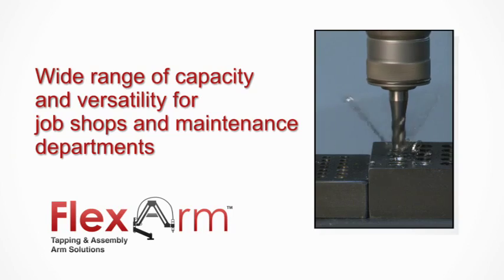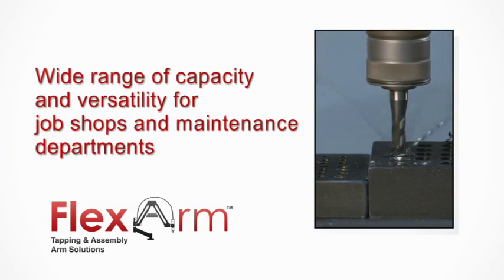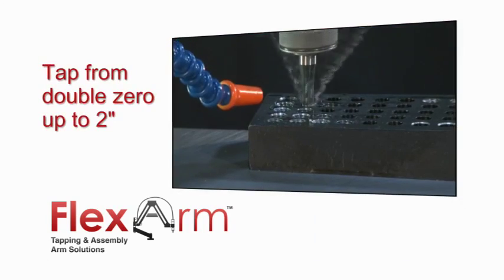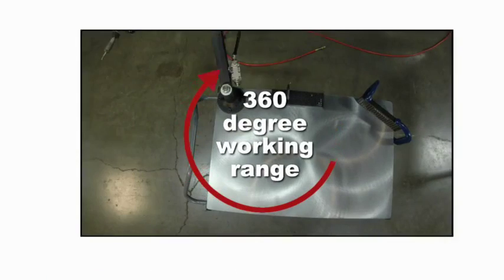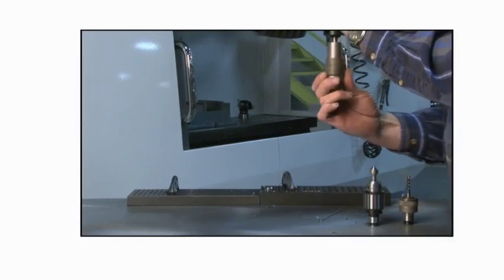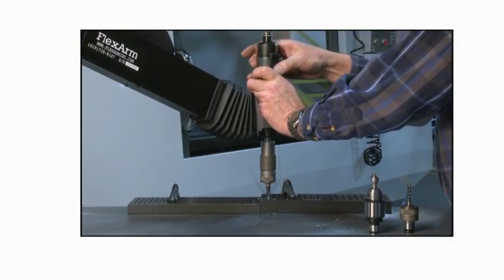Flexarm Tapping Arms have a wide range of capacity and versatility for job shops and maintenance departments. Tap from double zero up to two inch in mild steel and move with a 360 degree working range. Our quick change tooling also allows you to change from different size taps within seconds, with no adjustments.